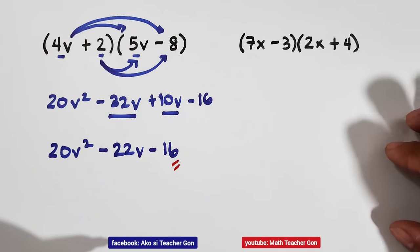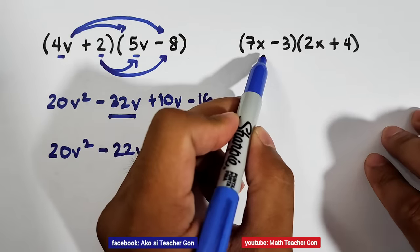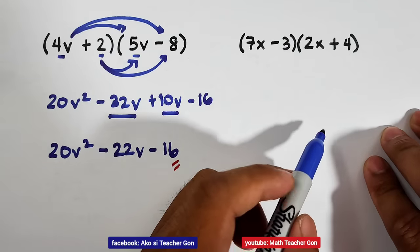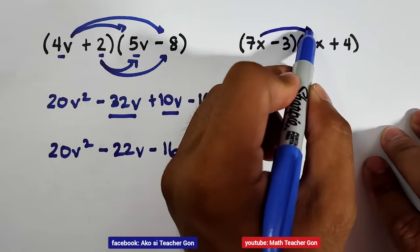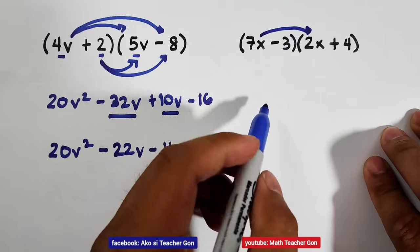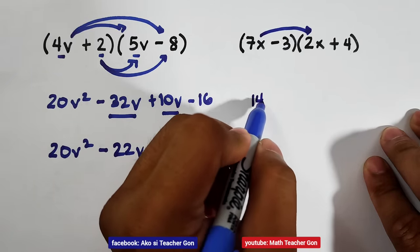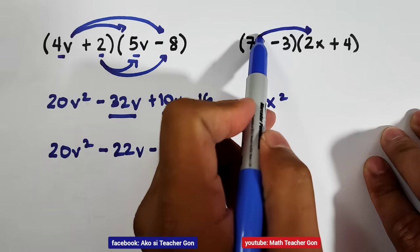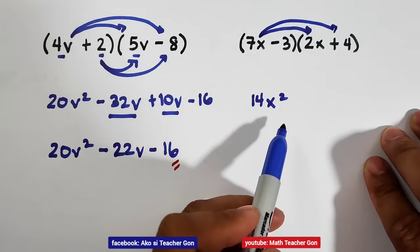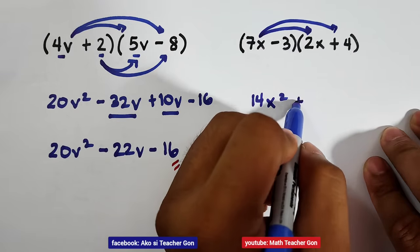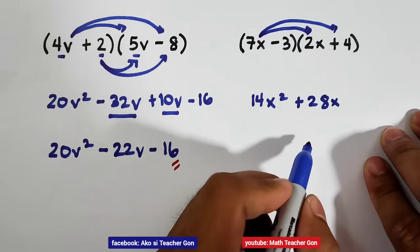Now let us have the last example. 7x minus 3 times 2x plus 4. Multiply these numbers. 7x times 2x is 14x squared. Next, 7x times 4. 7 times 4 is 28 with x, plus 28x.